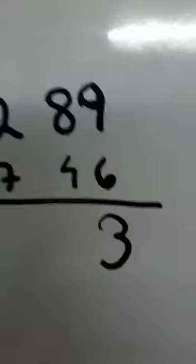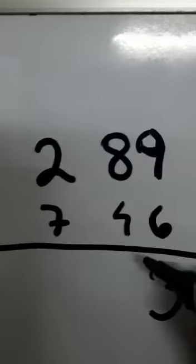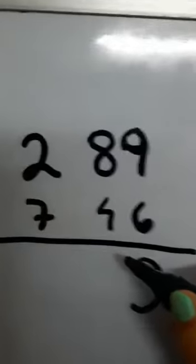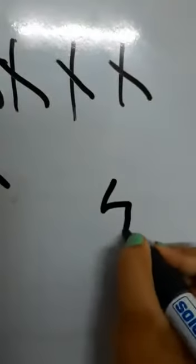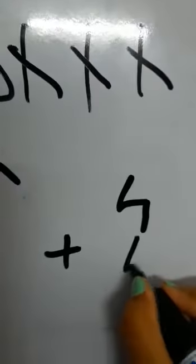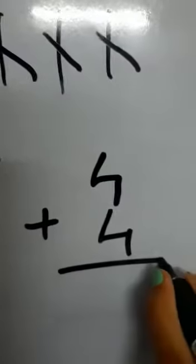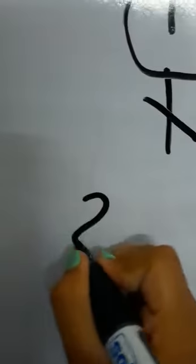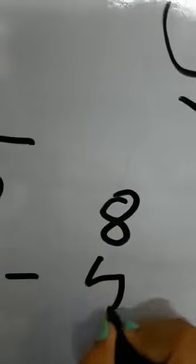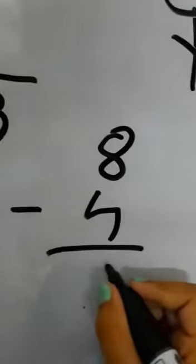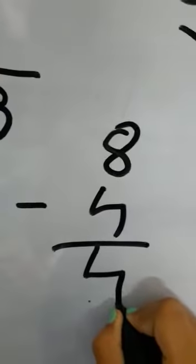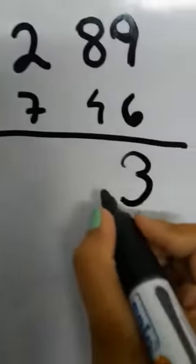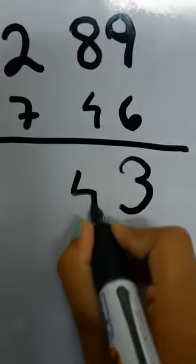Now the next one is 8 minus 4. How to do this? We know that 4 plus 4 equals 8. So now if we do 8 minus 4, then our answer will also come as 4.